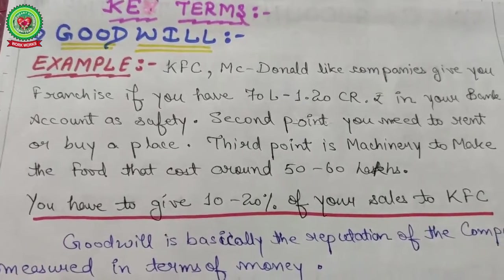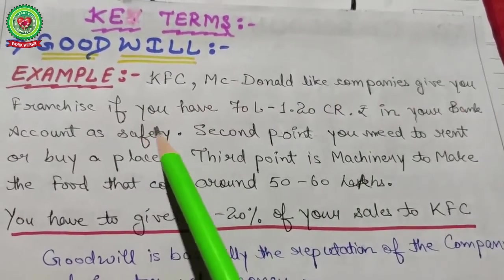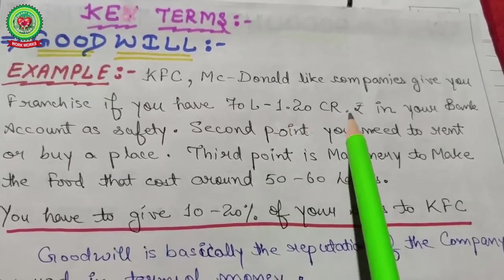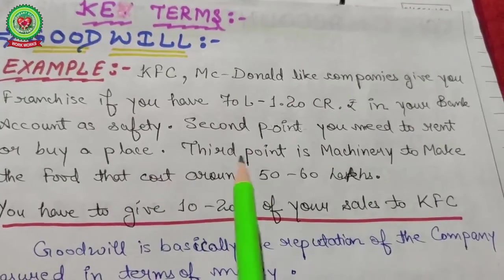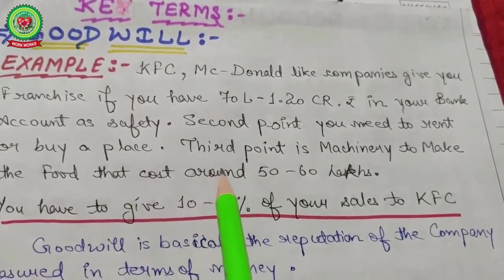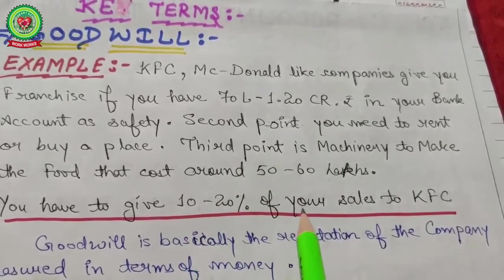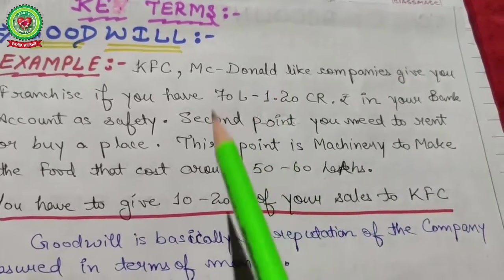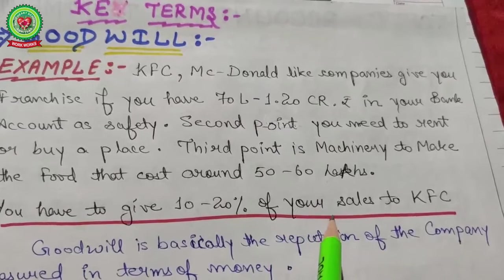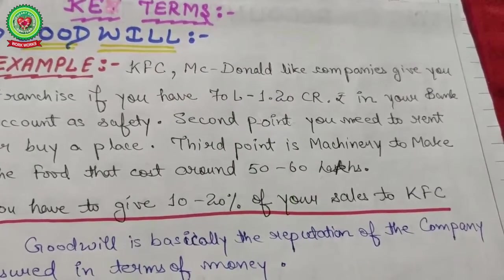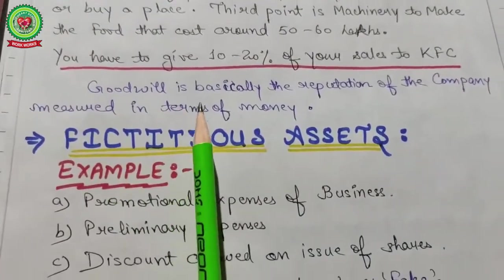For key terms, consider a KFC or McDonald's franchise. To get a franchise you need 7 lakh to 1.20 crore in your bank account as a safety deposit, a place to rent or buy, machinery costing 50 to 60 lakh, and you pay 10 to 20 percent of your sales to KFC — just because of using their name. That payment is because of the goodwill of these companies.